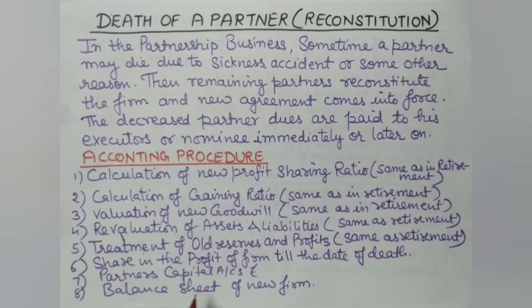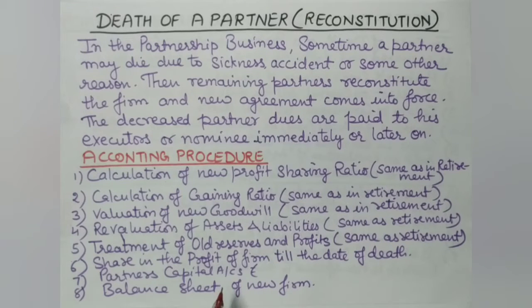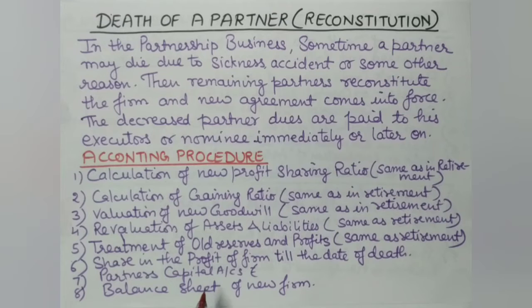The next step is to prepare the deceased partner's capital account. We make the deceased partner's capital account and everything is debited or credited accordingly to arrive at the closing capital. Finally, we transfer the closing balance to the executor's account. The executor's account is then settled. Other partners may also adjust their capital accounts since there is a reconstitution, just as in retirement.